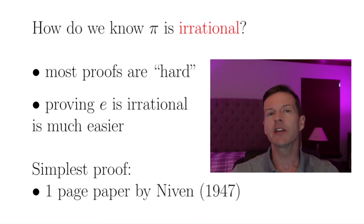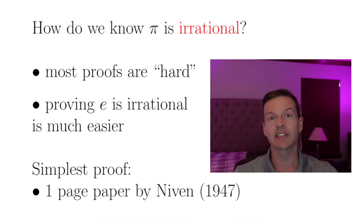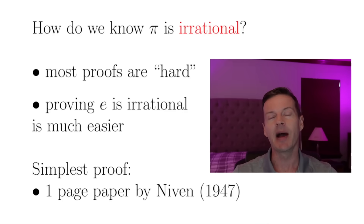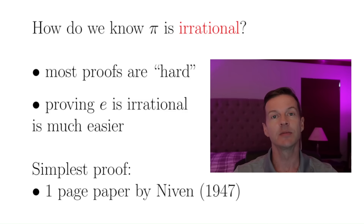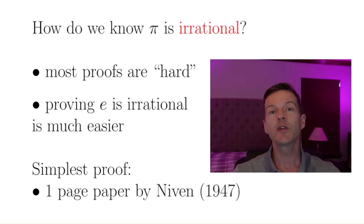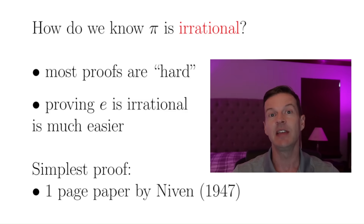It's quite a bit more difficult, for example, than proving that the number e is irrational, which is what my next video is going to be about. But there's one particular proof that I think stands out above all the others in terms of its simplicity. And this proof was given in a one-page paper by a mathematician named Ivan Niven in 1947.